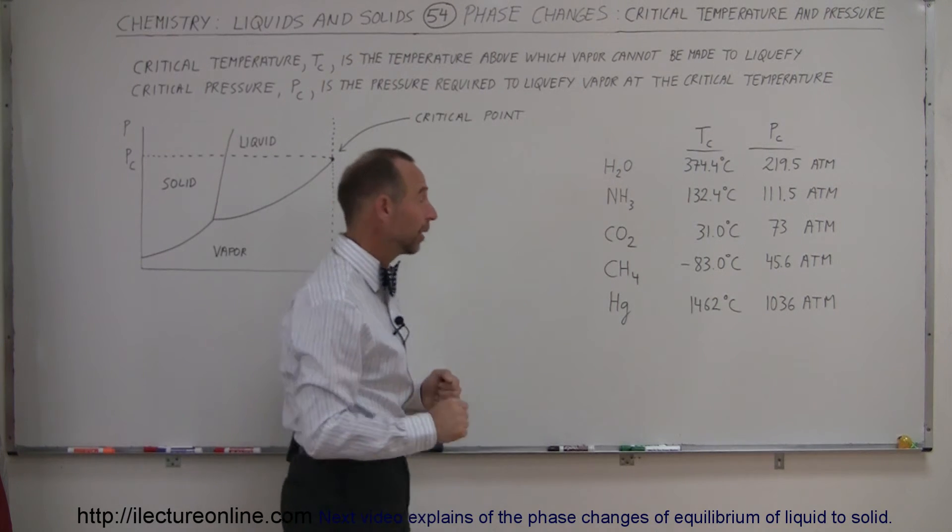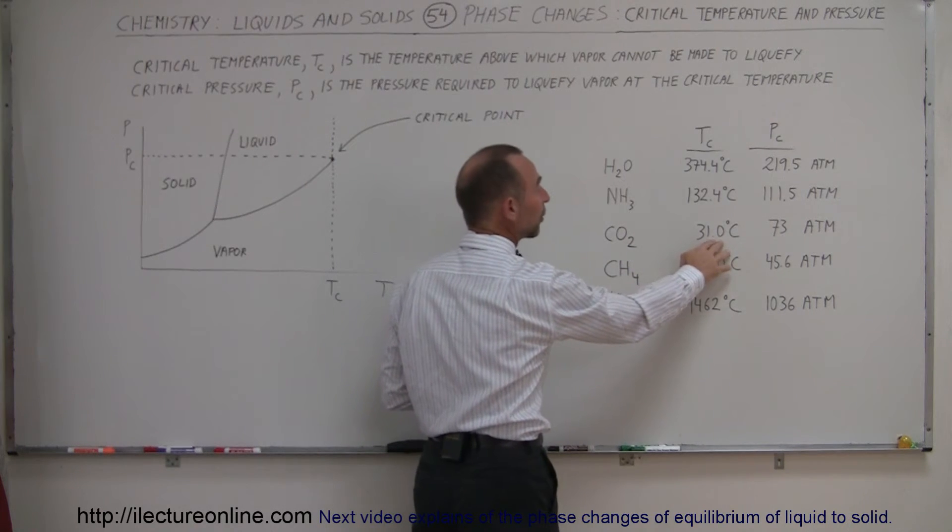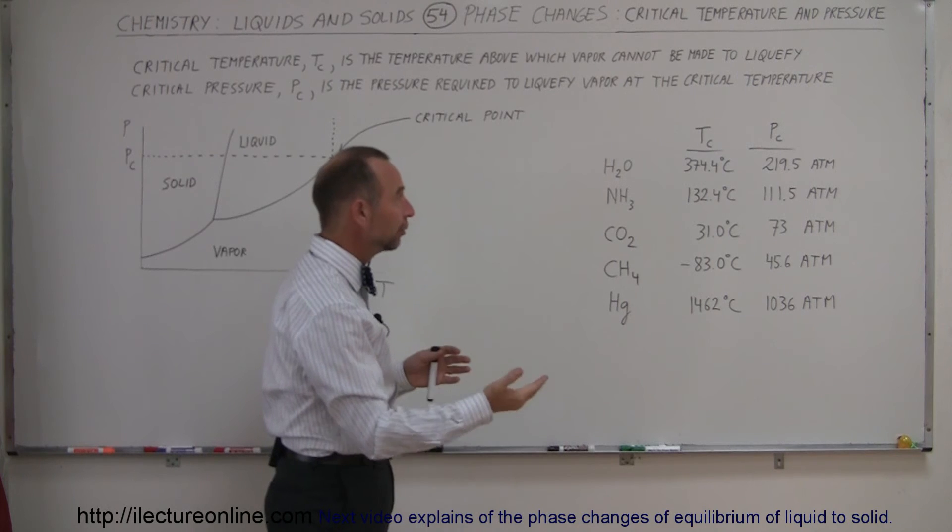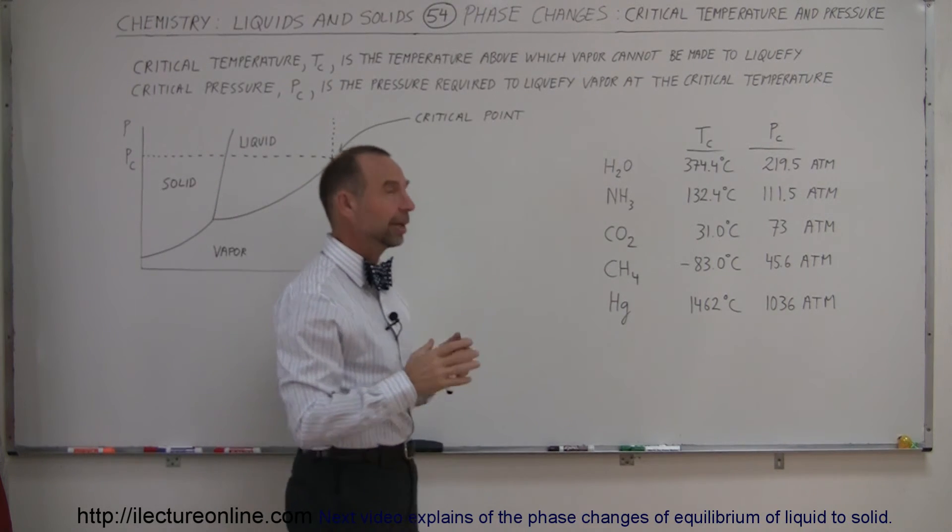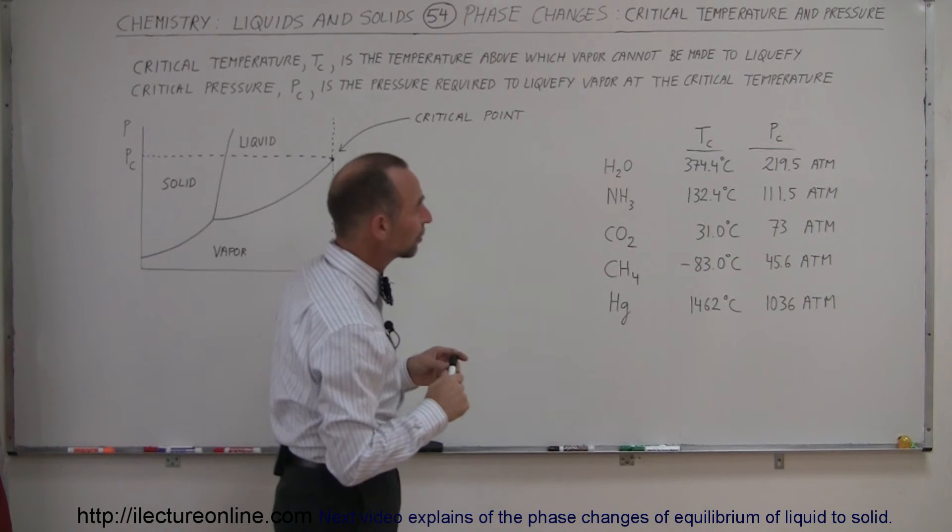Now here's an interesting one. Carbon dioxide, notice that it's actually very low temperature, 31.0 degrees centigrade, to turn carbon dioxide into a liquid. Well, actually, let's see here. The temperature, 73 atmospheres.